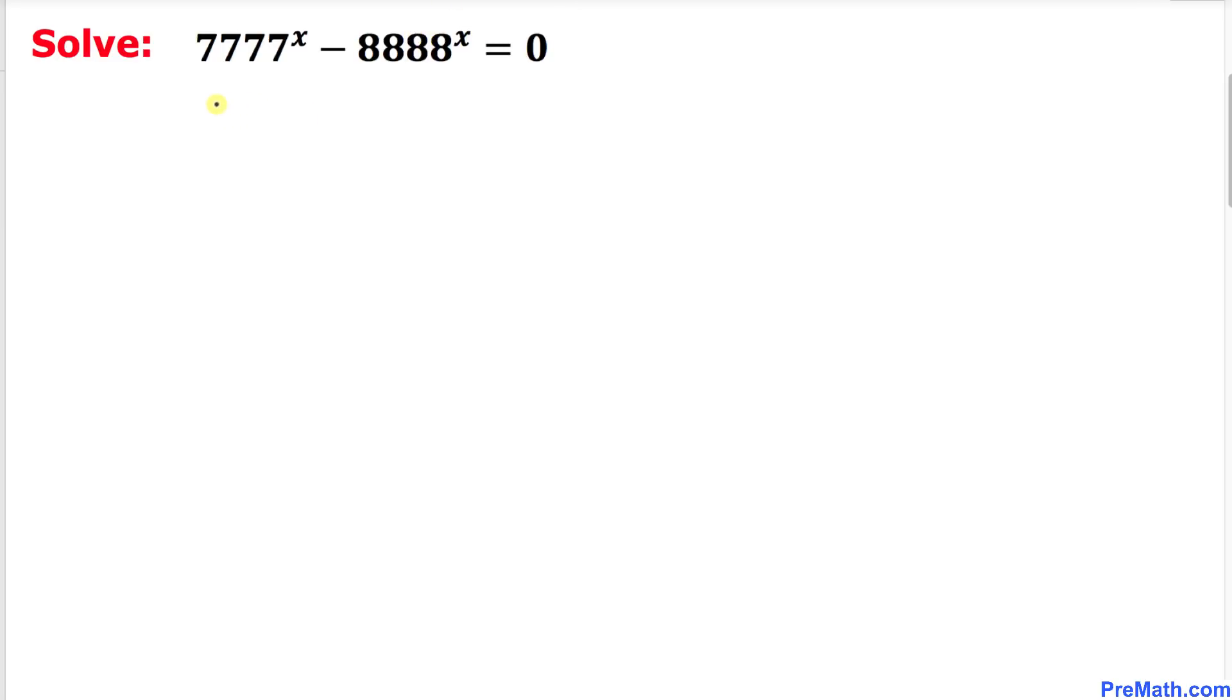Therefore, this equation could be written as: on the left hand side is going to be 7777 power x equals to 8888 power x on the right hand side.